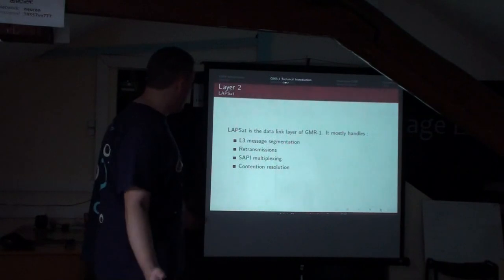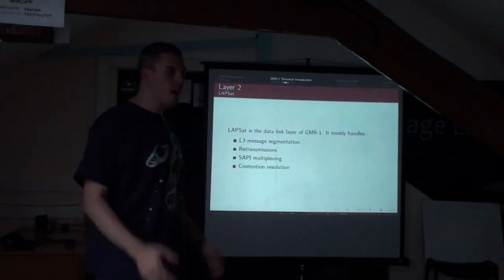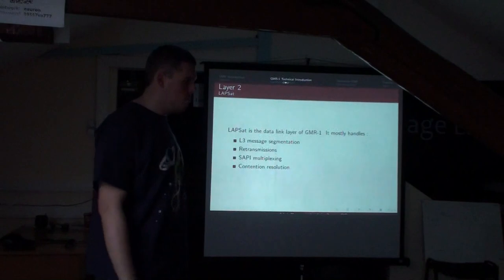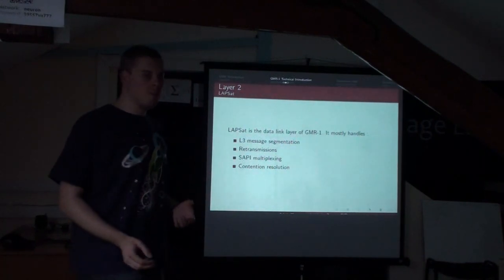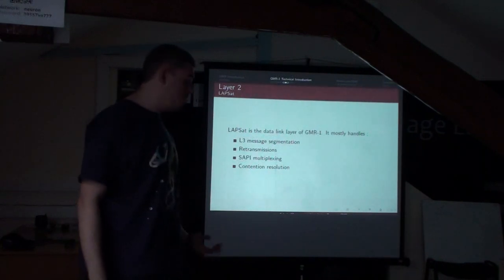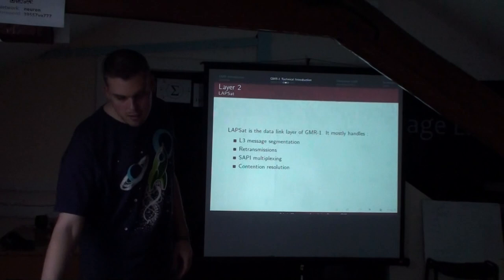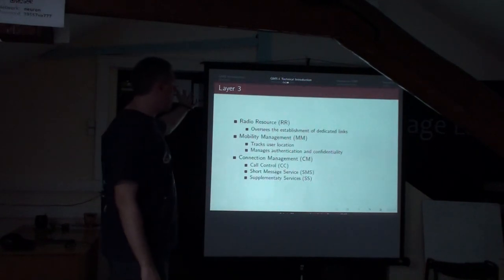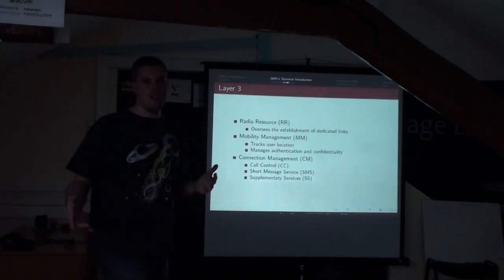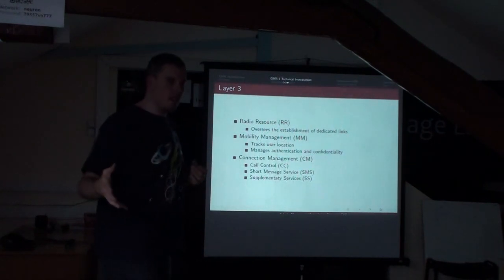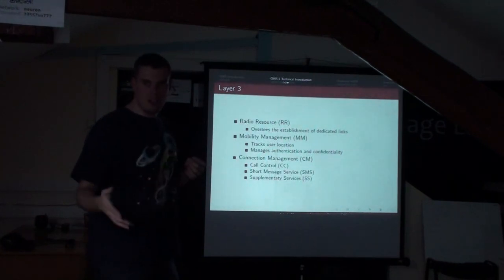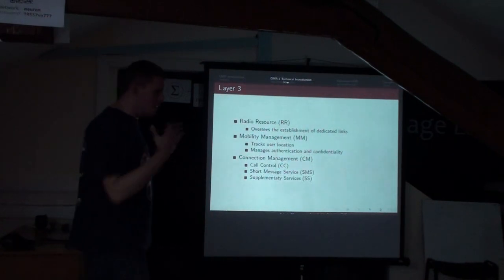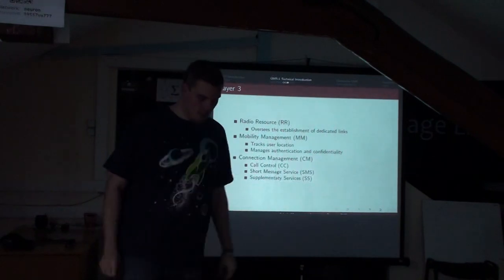Layer 2 is pretty similar to GSM — it segments higher-level messages into fixed-size messages, handles transmission contention resolution, and supports SAPI, a kind of multiplexing of sub-channels within the primary communication channel. Layer 3 follows the same pattern as GSM: the RR sublayer is different, but you find the same messages with the same names. For instance, 'immediate assignment' exists in both GMR and GSM and does exactly the same thing — it just has different bits inside.